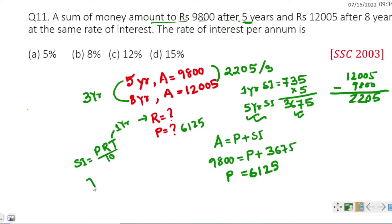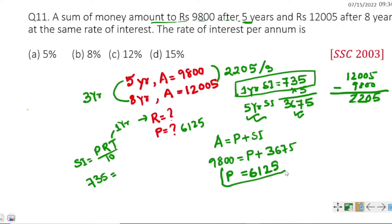SI is 735, Principal is 6125, Time T is 1 year, and we need to find R. Substituting: 735 = 6125 × R × 1 divided by 100. Solving for R.